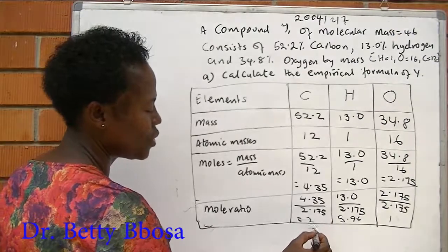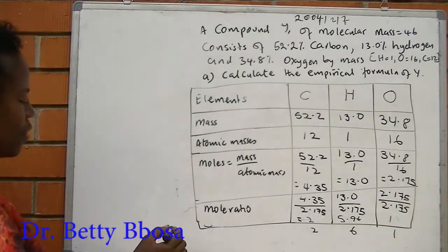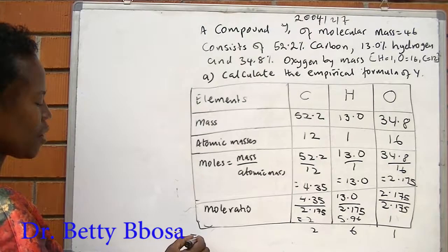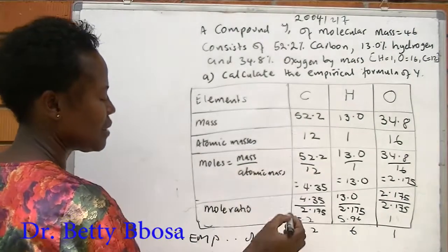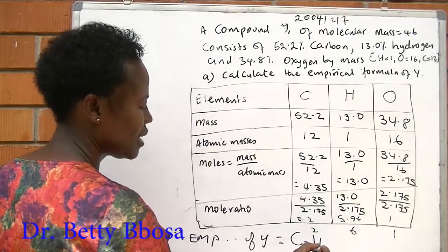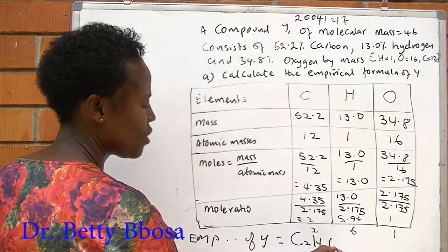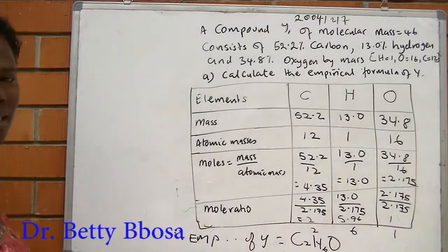So this will be a 2, this will be a 6, and 1. Therefore, the empirical formula of Y is equal to C2H6O1. Since it is 1, you can leave it the way it is.